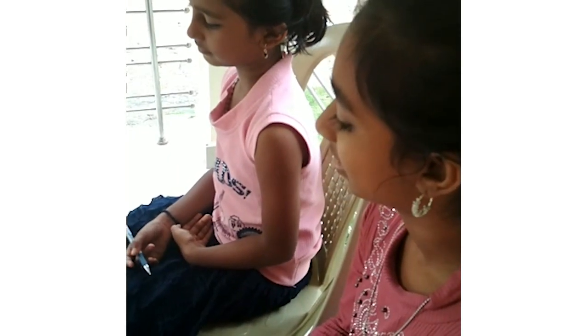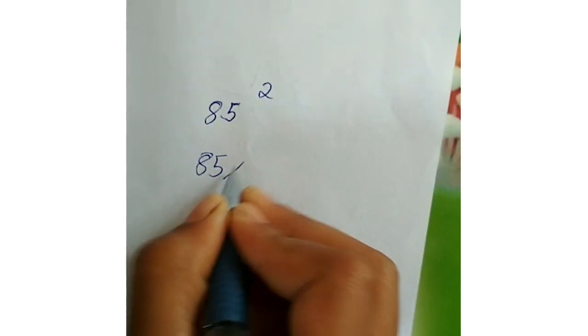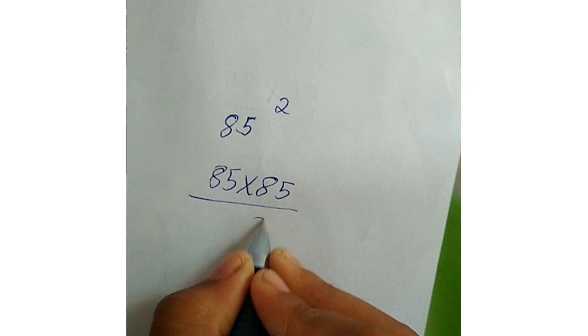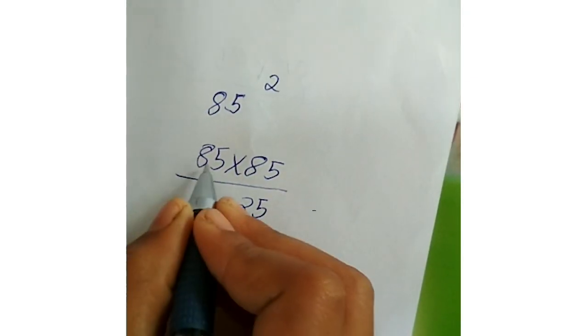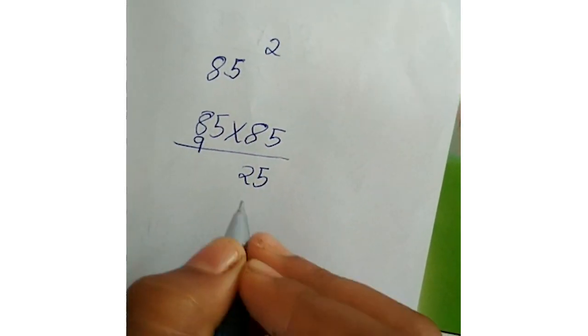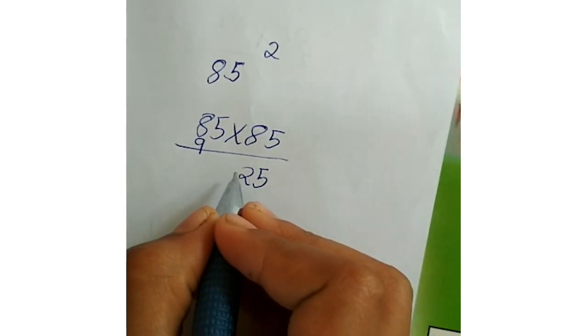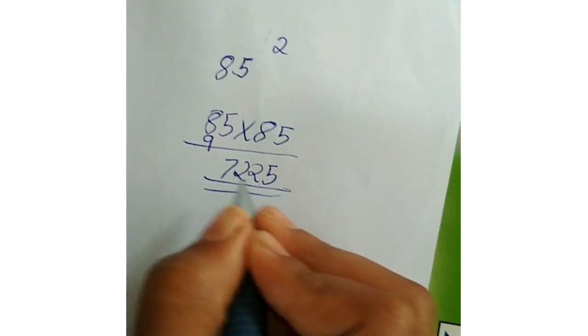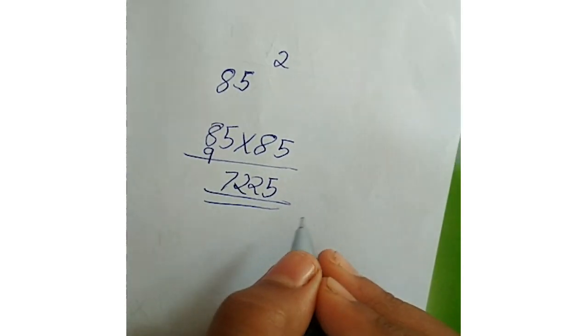Let's take a big number. 85 square means 85 into 85. Now, let's find the answer. First, write 25. And the next number is 9. Then multiply 8 into 9, and that is 72. Now, the total answer is 7225.